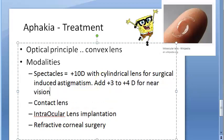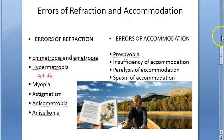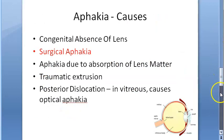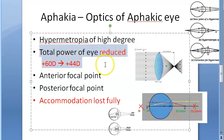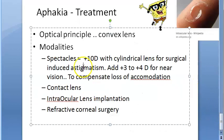You may add plus 3 to plus 4 diopters for near vision to compensate for loss of accommodation. In a normal eye the power is plus 60 D, and in aphakia it is reduced to plus 44 D, so they give around plus 10 diopters correction.